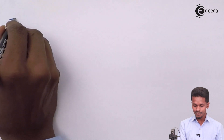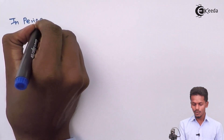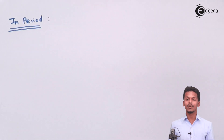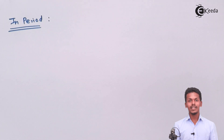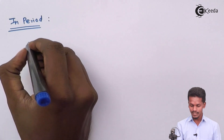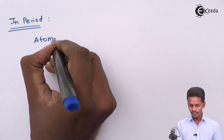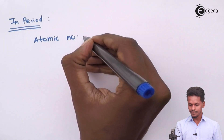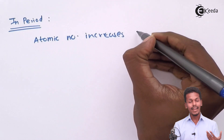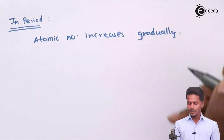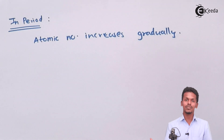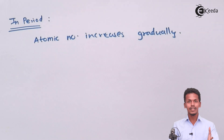Let's talk about the trend or variation we observe in a period. When we talk about ionic size in terms of a period, we see that as the atomic number increases, the atomic size also decreases. So in a period, the atomic number increases gradually. When talking about an ion, the atomic number is nothing but the number of protons present in the atom or ion, since the number of protons remains the same.